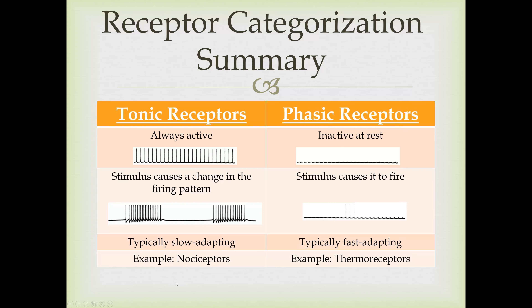A good example of a tonic receptor is a nociceptor—a pain receptor. Because they're slow-adapting, this is why you typically feel aches and pains even when you're trying not to pay attention to them—they still get through. Thermoreceptors are an example of phasic receptors. Right after you touch something hot or cold, within a few minutes you're no longer consciously aware of the temperature difference.